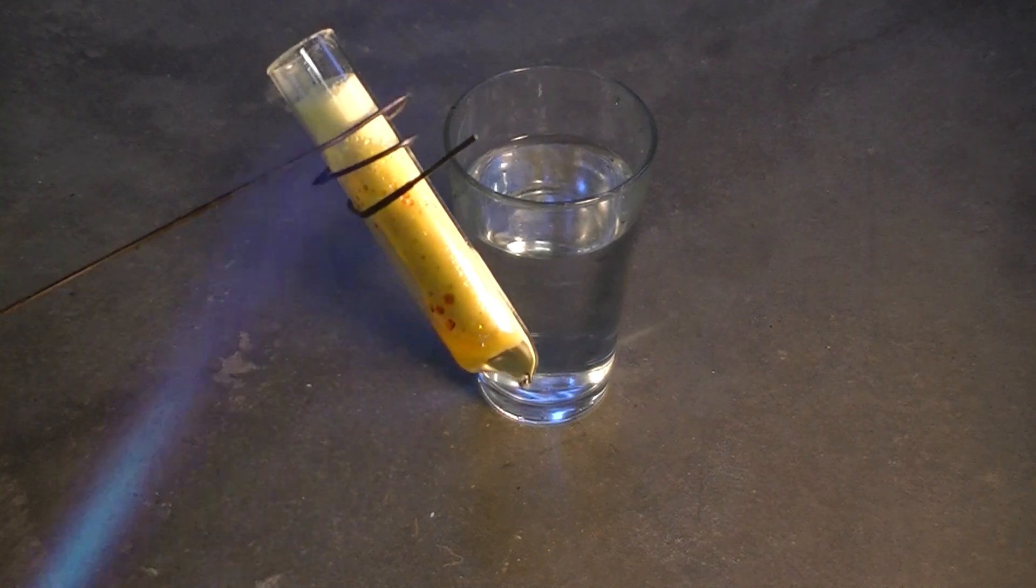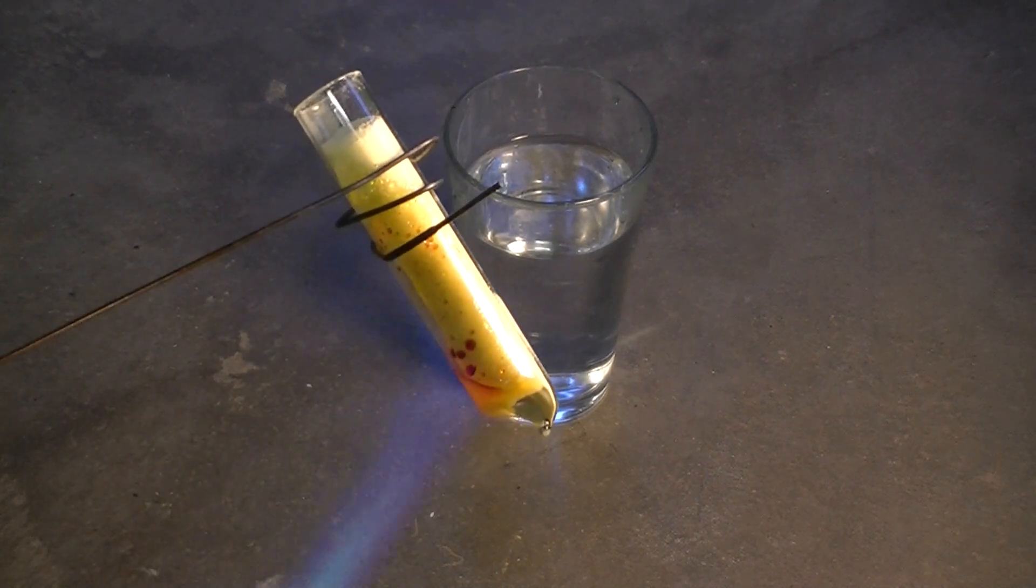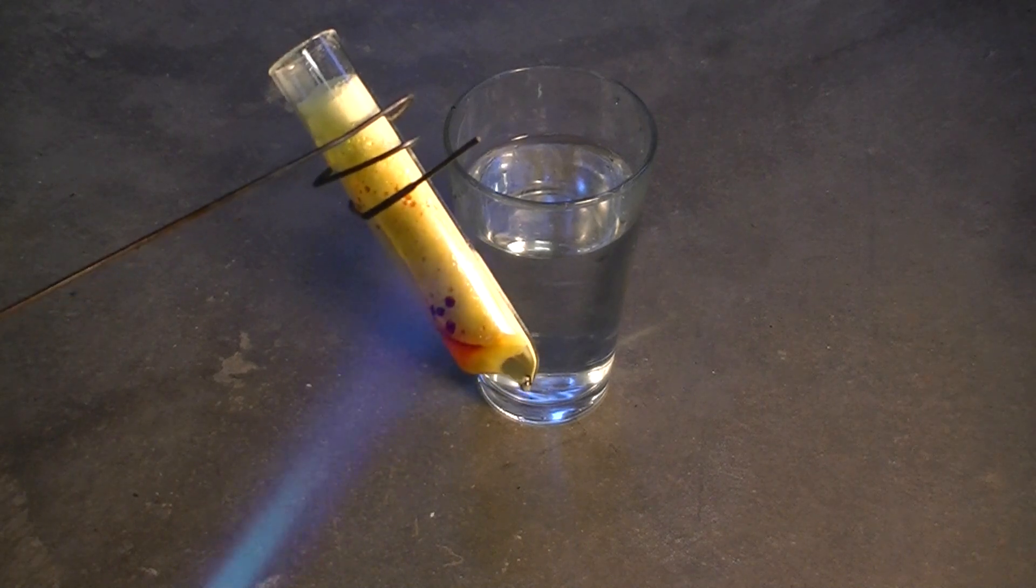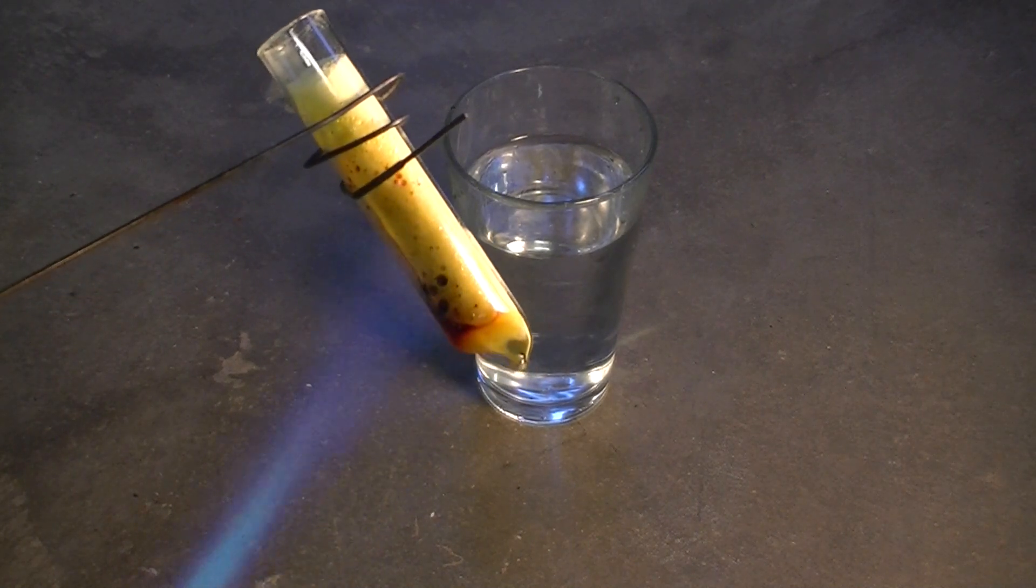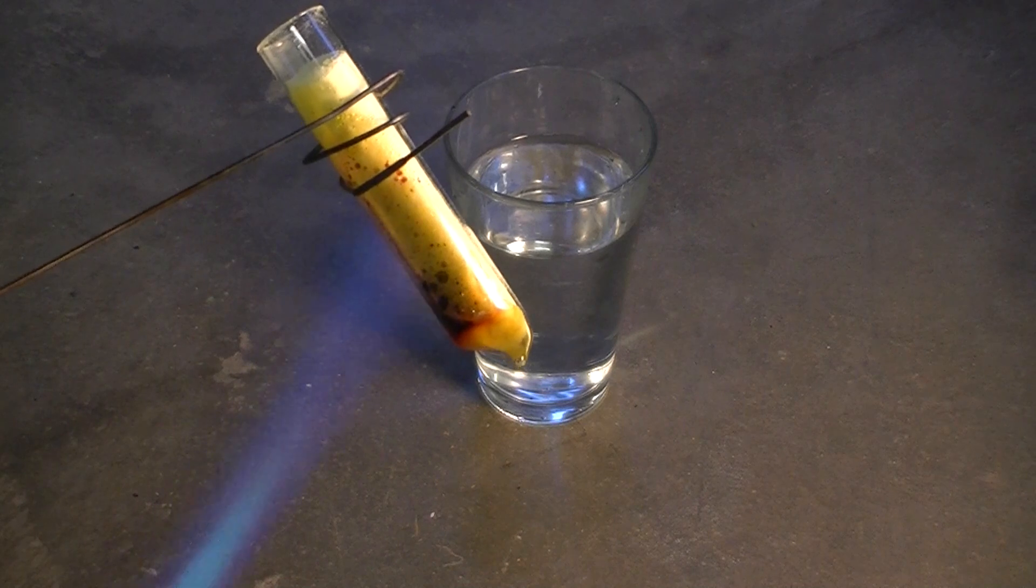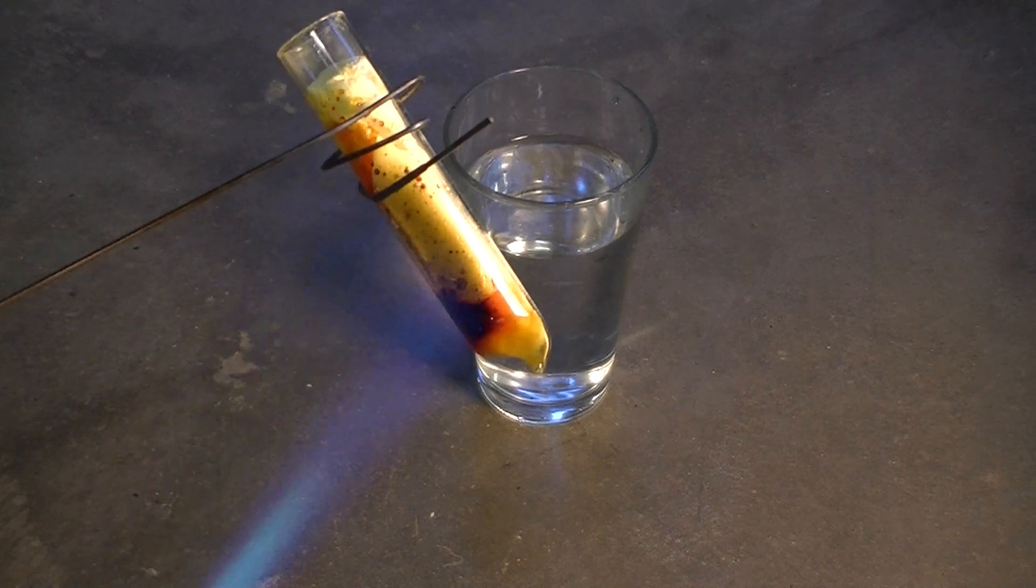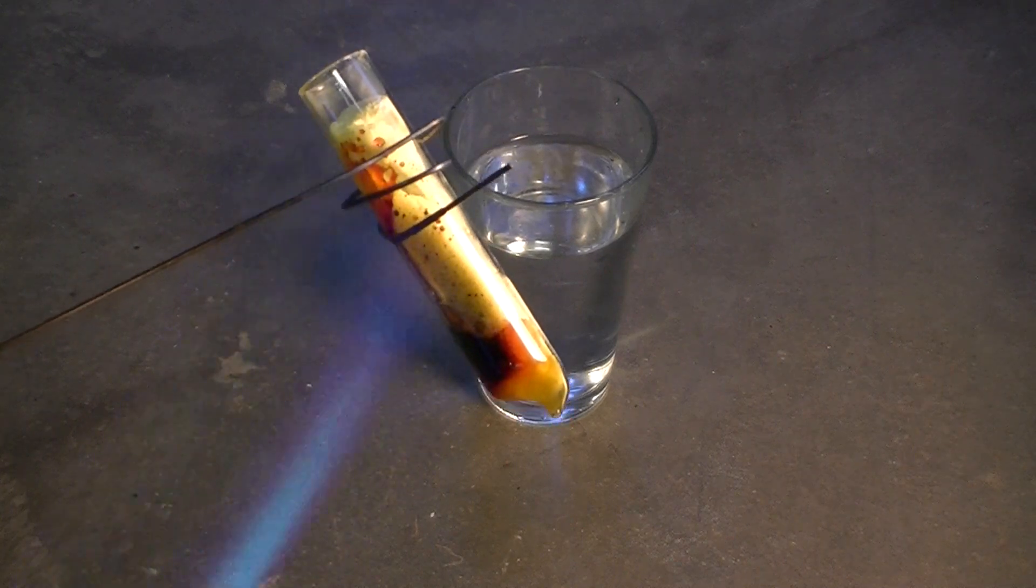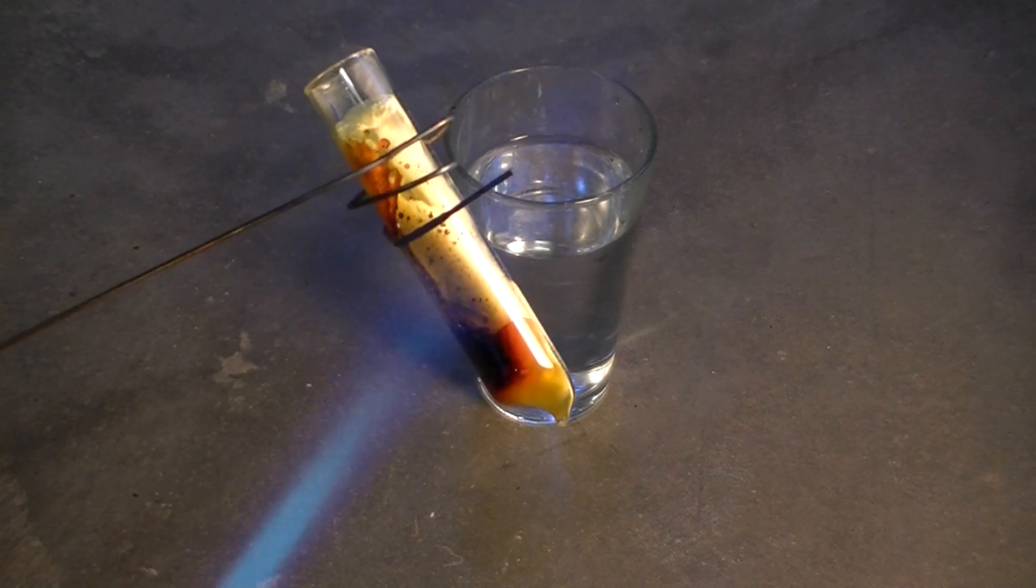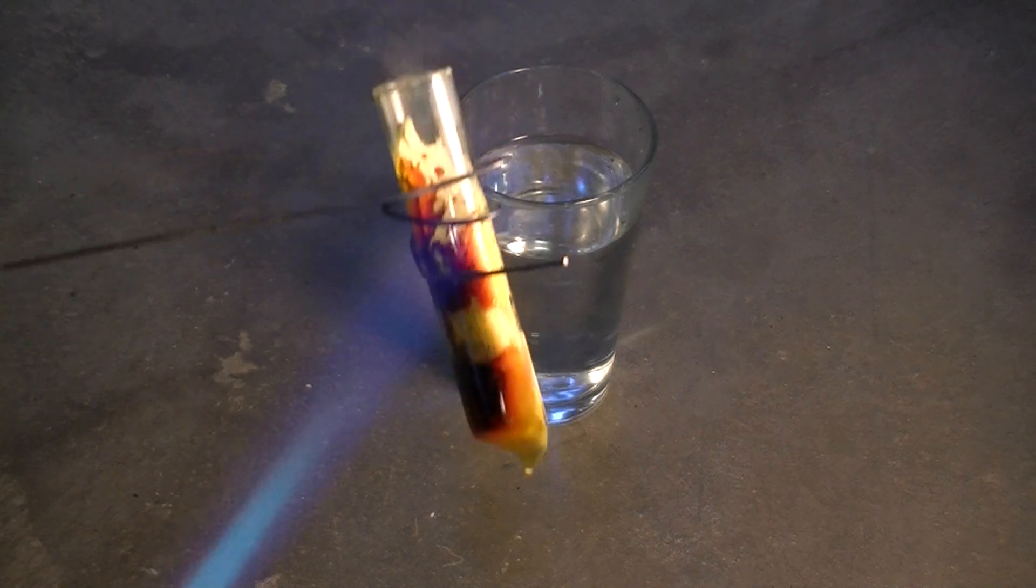Sulfur is very unique when it comes to allotropes, as no element is known to be able to form more allotropes than sulfur. Today we know of at least 30 different ways in which sulfur can arrange its atoms to form 30 different allotropes, or effectively 30 different materials based on elemental sulfur.